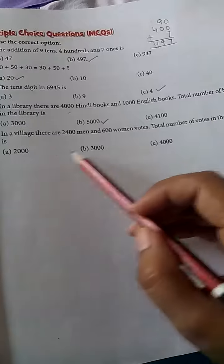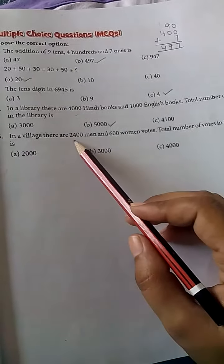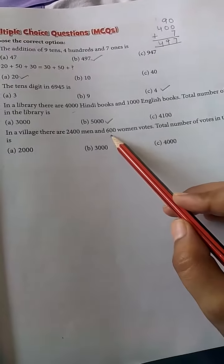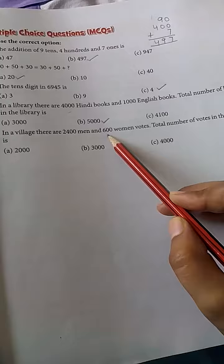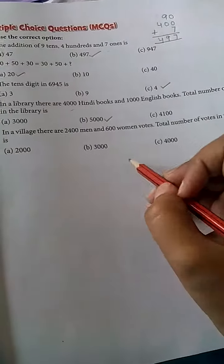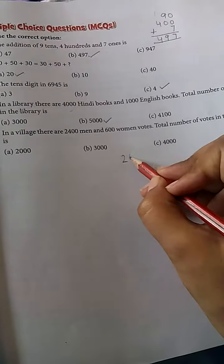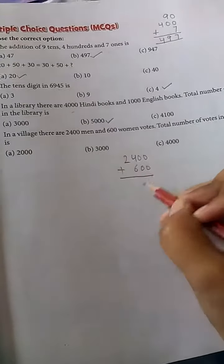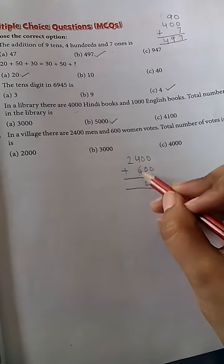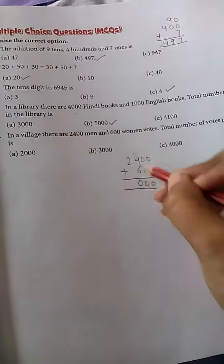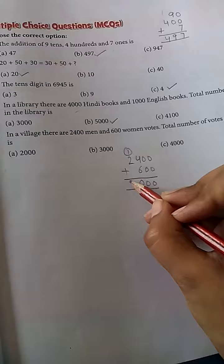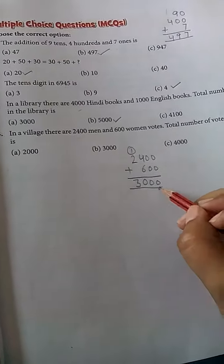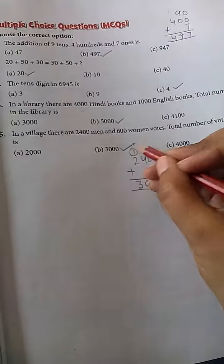number of voters in the village is—men voted 2,400 and women voted 600. For total number, we add: 2,400 + 600. 0, 0, 4 in your mind, 6 on your finger is 10, 1 carry and 3. Total number of voters: 3,000. This means answer B is correct.